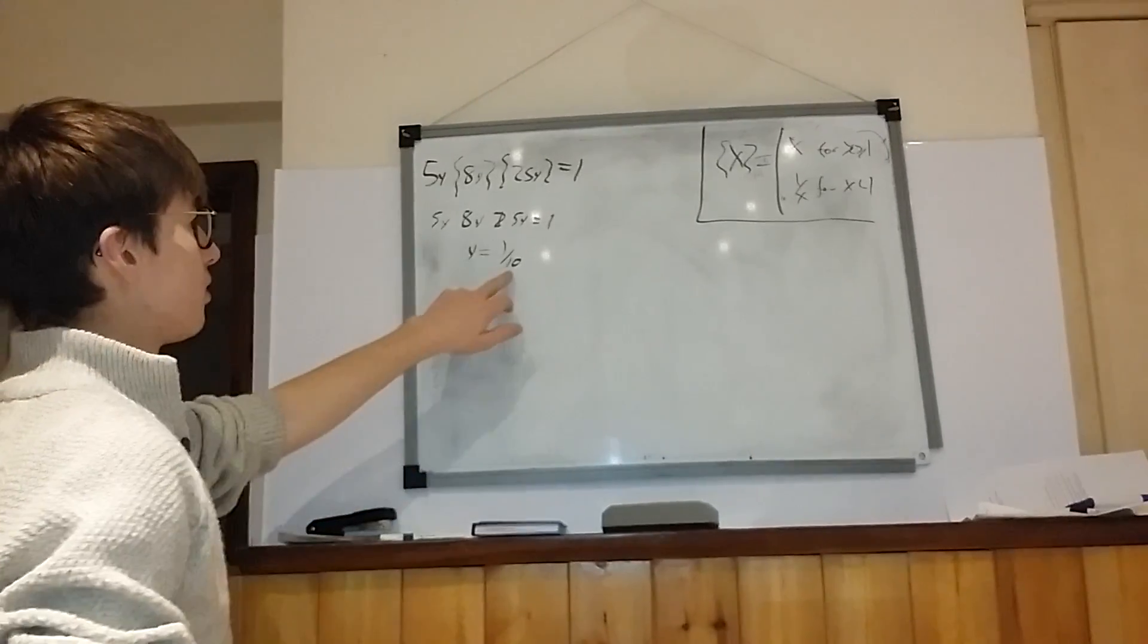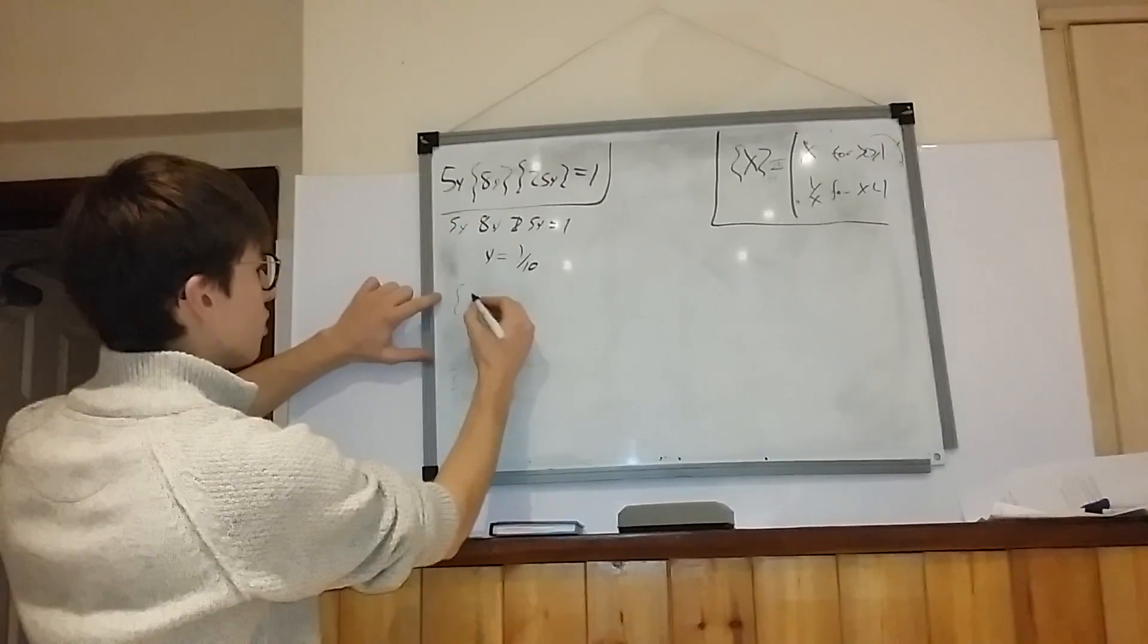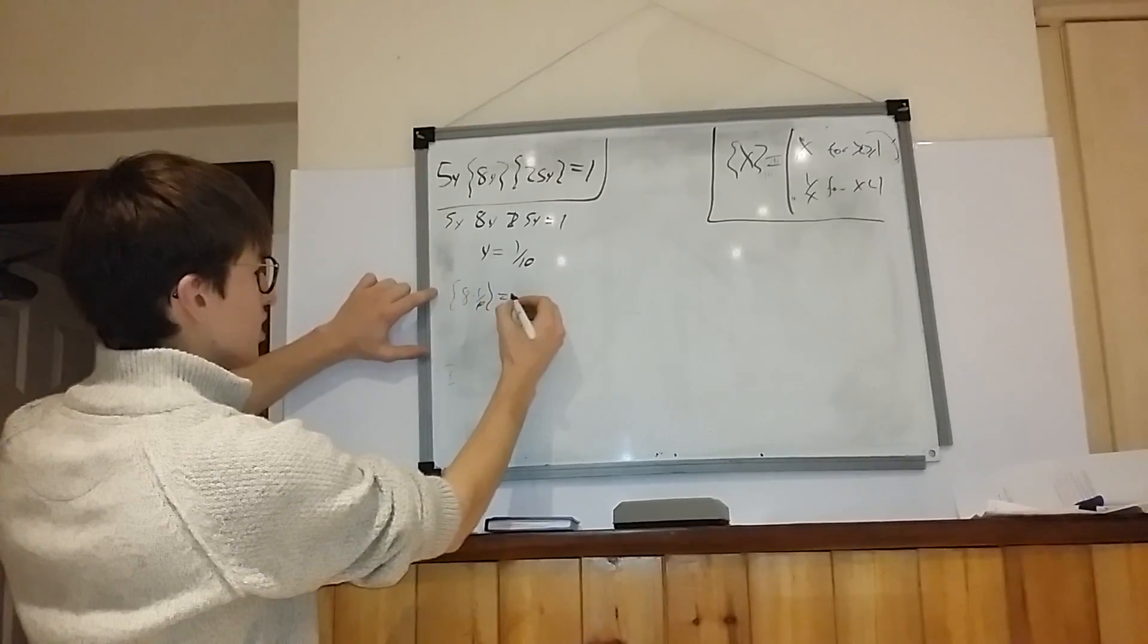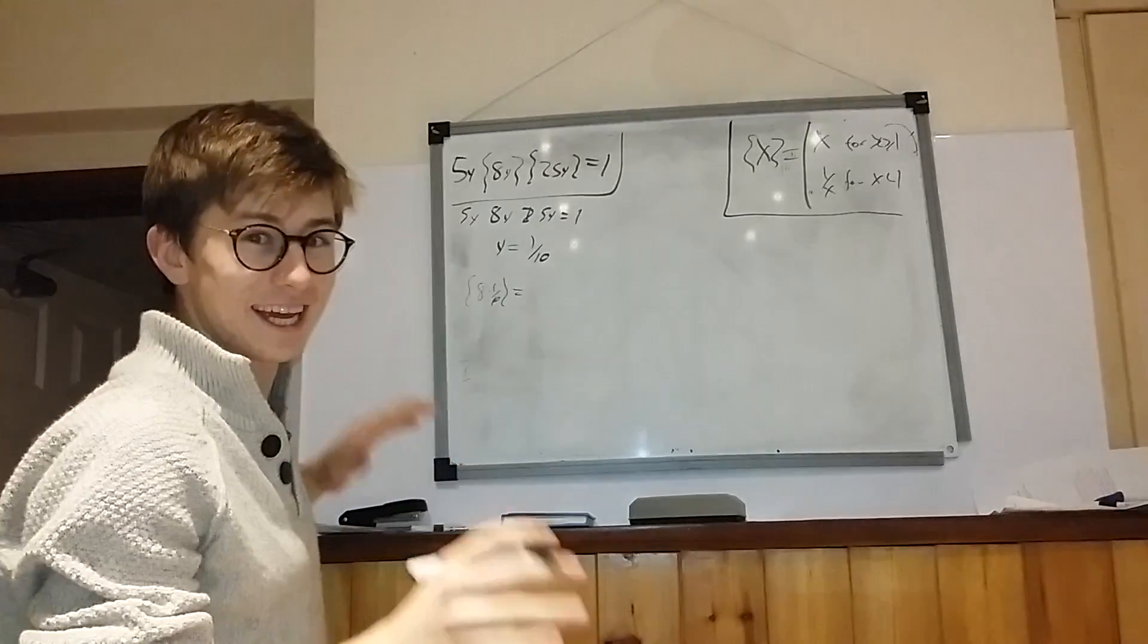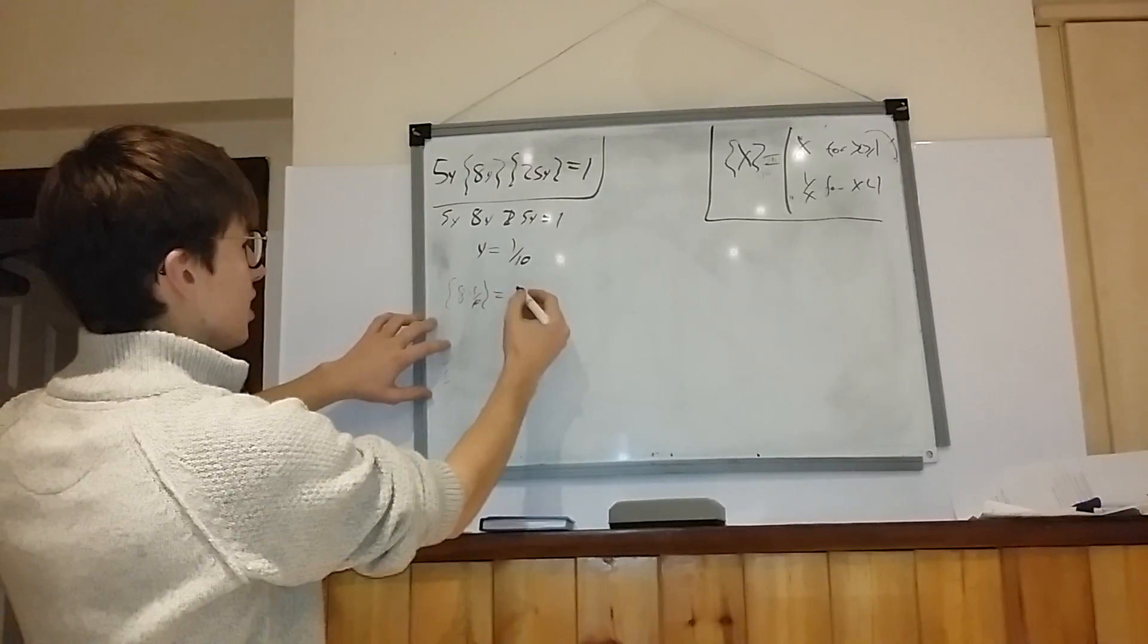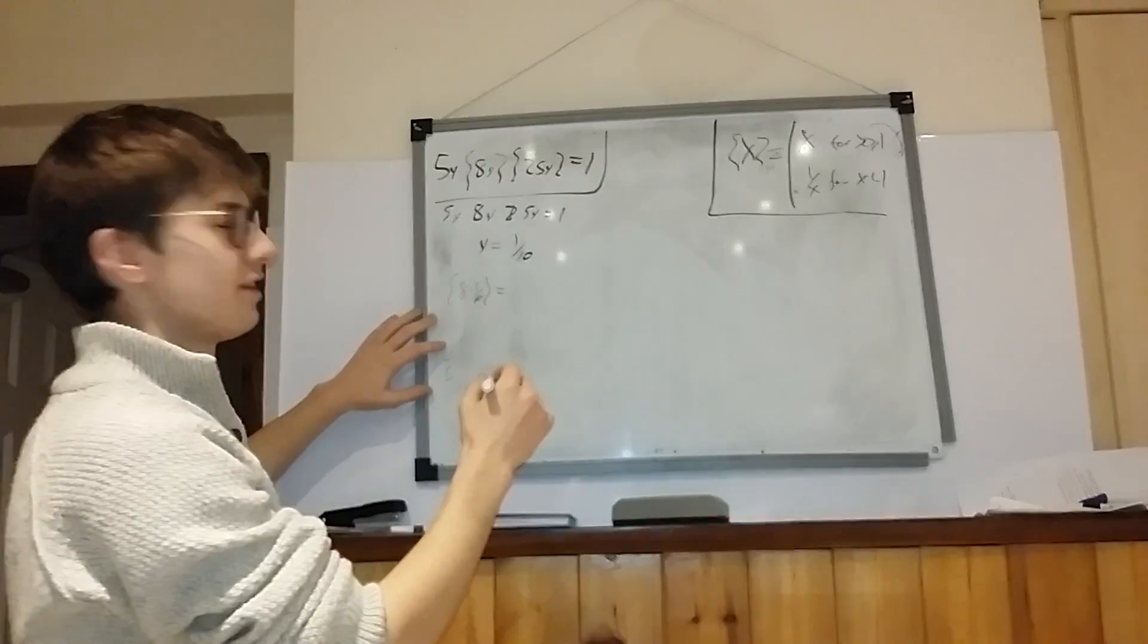So basically then, you plug 1 over 10 into this formula. So initially you get the thing of 8 times a tenth, which is 8 over 10, which is less than 1. And so clearly this is going to be less than 1. So this one doesn't work.